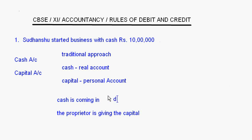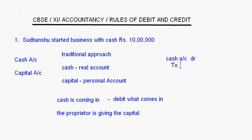For a real account, the rule is: debit what comes in. Cash is coming into the business, so we write cash account debit. And who is giving the cash? Basically the proprietor is giving the cash, but it is the capital account. So, to capital account. This is the entry we pass and the logic we follow in the traditional approach. The proprietor is giving the capital — this is a personal account, so we say credit the giver.